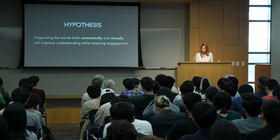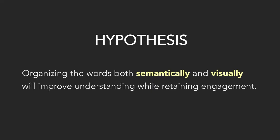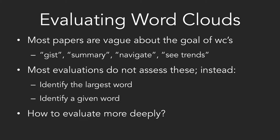The hypothesis was: organizing the words both semantically and visually will improve understanding while retaining engagement. A big question is how do you evaluate these things? If you say what the category is supposed to be, you've already said what the category is. One of our contributions was coming up with a way to evaluate them. Most research papers about word clouds are vague about their goal — they say 'gist' or 'summary' or 'navigate' or 'see trends.' But when they evaluate them, participants just identify the largest word or identify a word. So how do we evaluate more deeply?